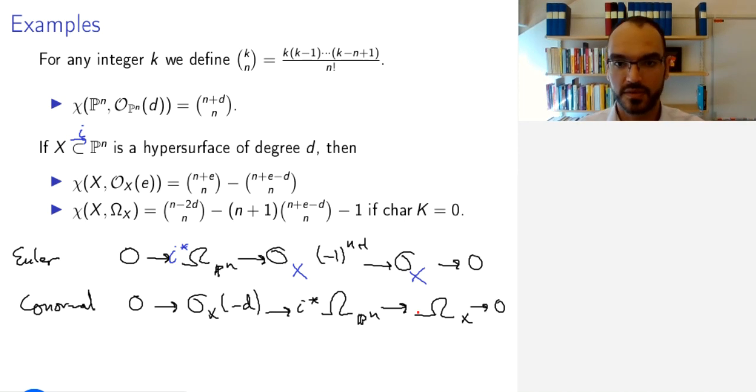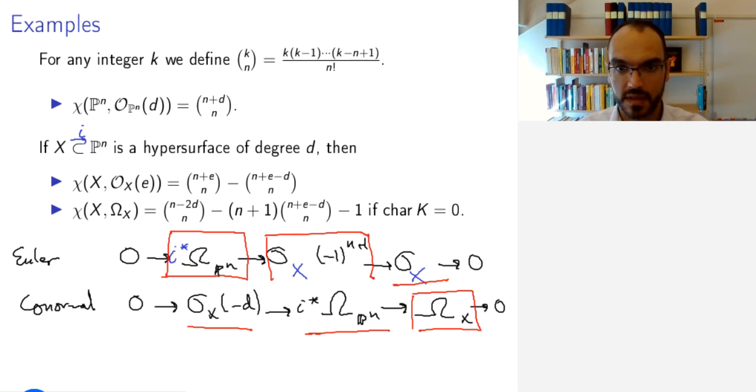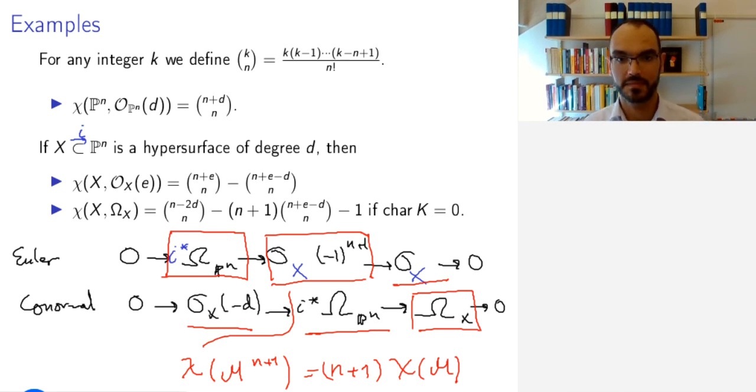Now, what I want to compute is the Euler characteristic of this sheaf. From the additivity of Euler characteristic, I know it provided that I can calculate this one and this one. The first one I know from the previous formula. The second one I get by a similar reasoning from the first sequence. So here I can get it knowing this one, which is just O_X(e) with e equals zero. And this one, knowing that the Euler characteristic of something raised to the power n plus one is n plus one times the Euler characteristic of the thing itself by repeatedly applying the additivity. So I get these results. If I combine them, I will get the right answer.